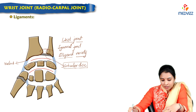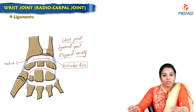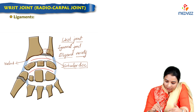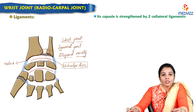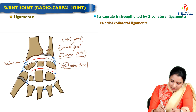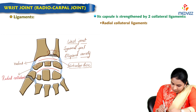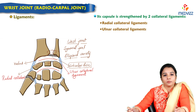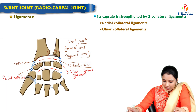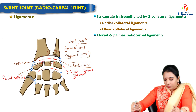As with other synovial joints, the wrist joint is also surrounded by the capsular ligament, which has proximal and distal attachments. Proximally it attaches to the radius all around, and distally it attaches to the proximal part of the carpal bones. The capsule is further strengthened by collateral ligaments. There are two collateral ligaments: one on the radial side (radial collateral ligament) and one on the ulnar side (ulnar collateral ligament). These strengthen the capsule on the medial and lateral sides. Intercarpal ligaments between the carpal bones are also associated with the wrist joint.